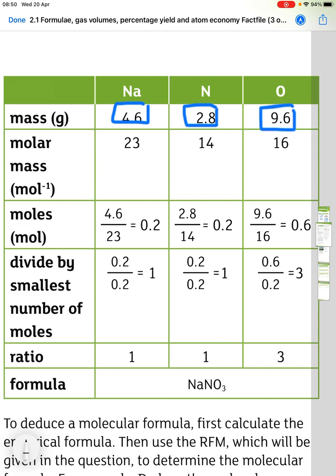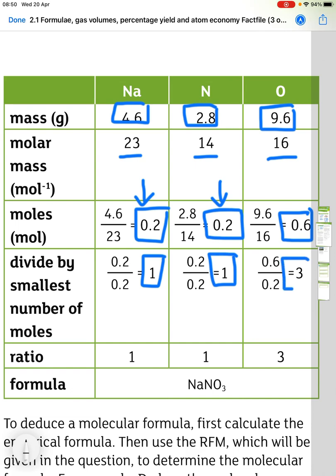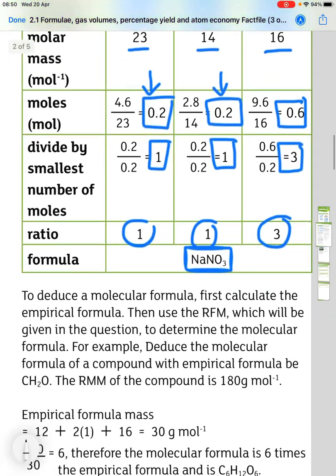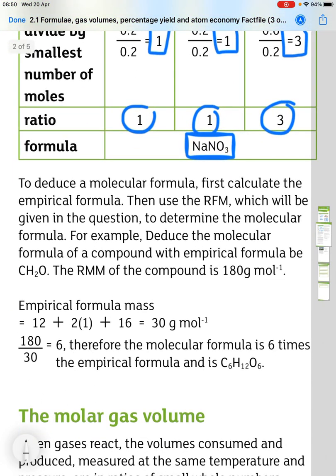This is just done here in a table. So we have our 4.6 grams, 2.8 grams and 9.6 grams of the respective elements. The molar masses are then written in. So sodium is 23, nitrogen is 14 and oxygen is 16. We find the number of moles. So 0.2 for sodium, 0.2 for nitrogen and 0.6 for oxygen. And then we divide by the smallest number, and the smallest number is 0.2. So for sodium we get 1, for nitrogen 1, and for oxygen 3. So the ratio is 1 to 1 to 3, which gives us the empirical formula of NaNO₃.